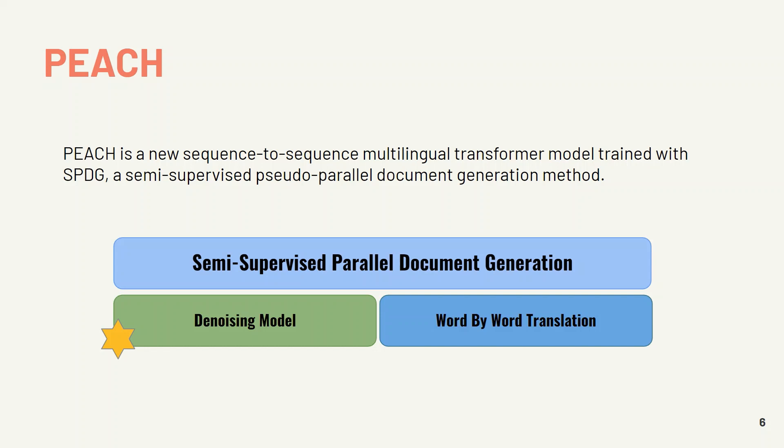Pitch is a new sequence-to-sequence multilingual transformer model trained with SPDG, which stands for the Semi-Supervised Pseudo-Parallel Data Document Generation method. Pitch has two sections. One of them is word-by-word translation, which uses bilingual dictionaries to produce the output sentence as a mapping of the input sentence. We also have the denoising model, which solves the issues with word-by-word translation and knows the structure of the output language, enabling us to generate high-quality output sentences.